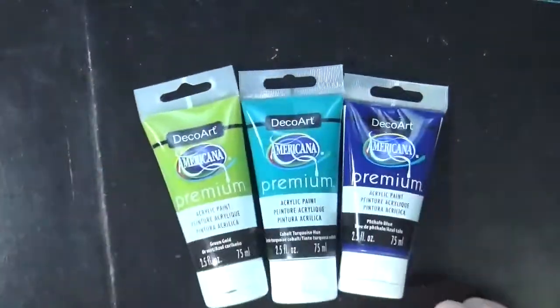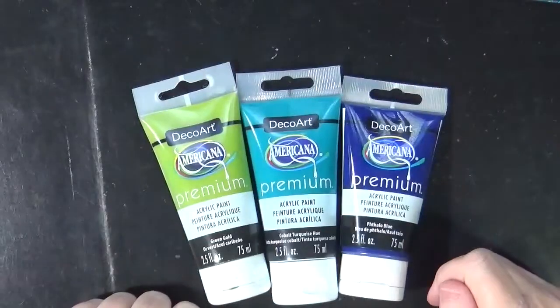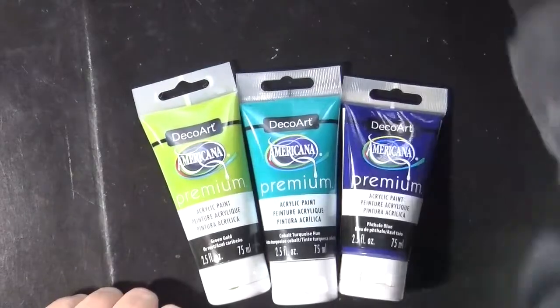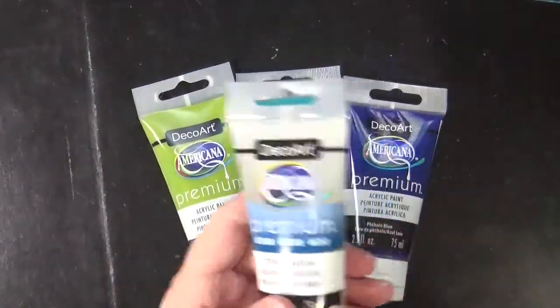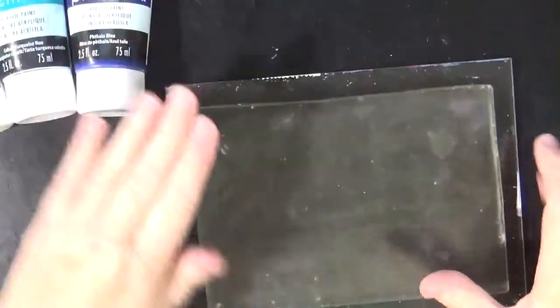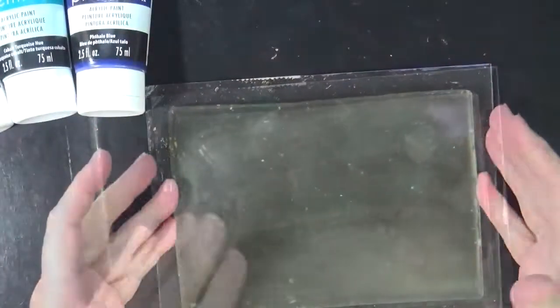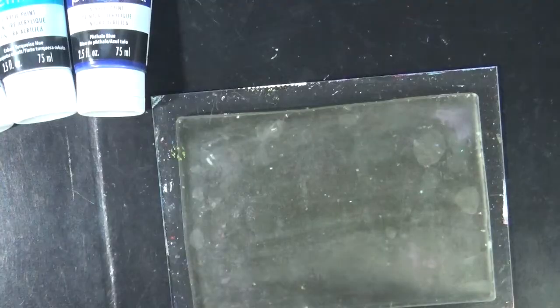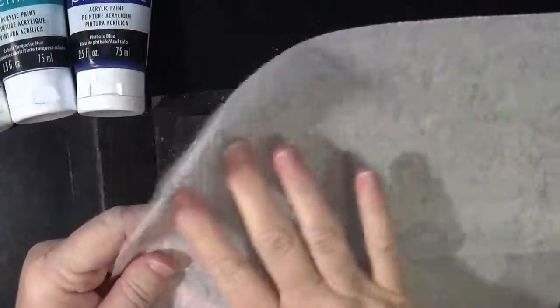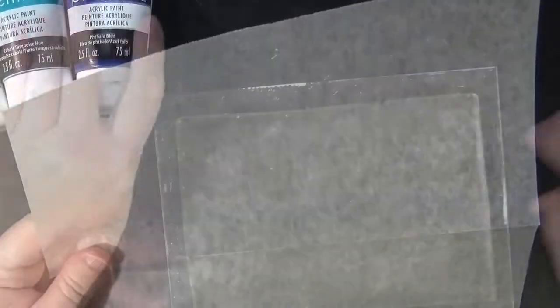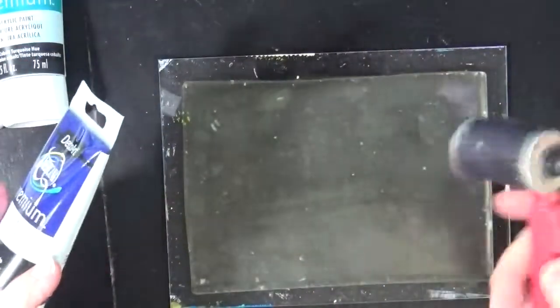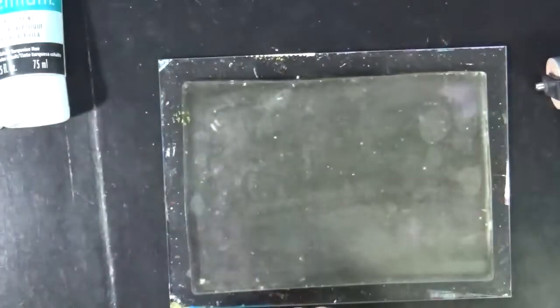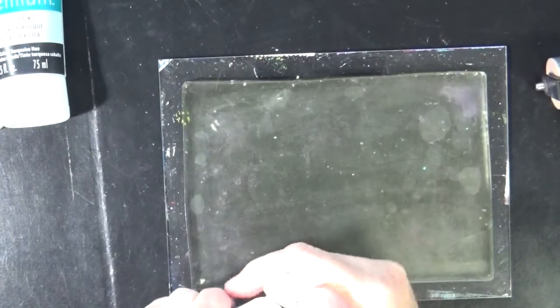We're going to use today these three DecoArt Premium Paints. We're also going to add just a little bit of extender to them. I'm going to do this on my 5x7 inch gel plate. We're going to use some deli paper to print on because I need to have this be somewhat semi-translucent. And I'm going to use my little 2 inch brayer because I want to keep the colors separate.